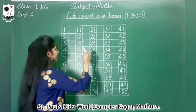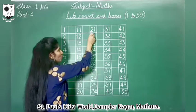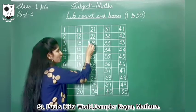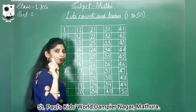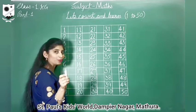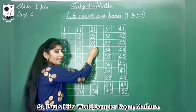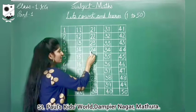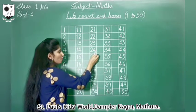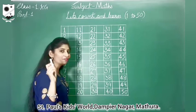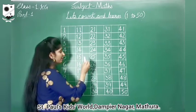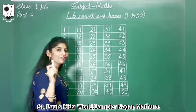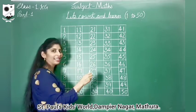2-1, 21. 2-2, 22. 2-3, 23. 2-4, 24. 2-5, 25. Let's count again.